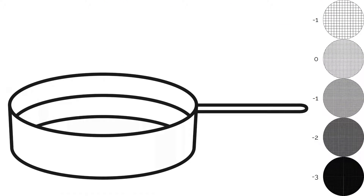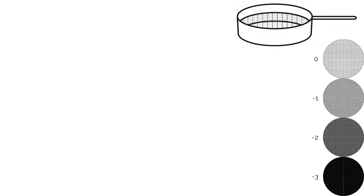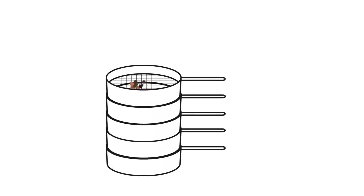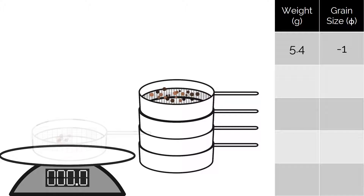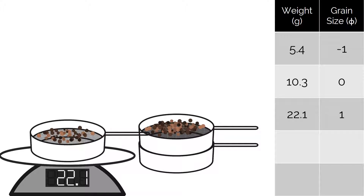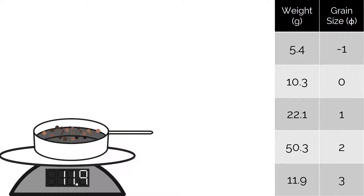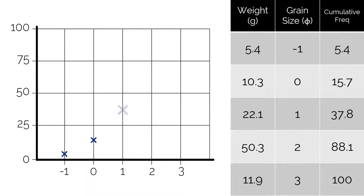A sieve for each grain size is used, often from minus 2 to 4 phi, covering all grain sizes from 4 millimetres down to 0.0625 millimetres. The sieves are stacked with the coarsest grille on top. Then 100 grams of sediment is poured in, the stack is shaken, and the results are weighed for each sieve. In this example, the top sieve contains all material with a diameter of 2 millimetres or greater, the second contains grains between 2 millimetres and 1 millimetre, and so on down to 0.125 millimetres. The weights will be a percentage of the total, as 100 grams of sediment was poured in, making calculating the cumulative frequency simple, as is drawing the graph.